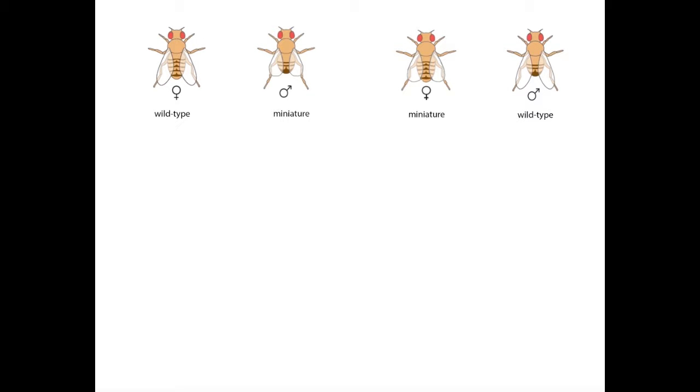X-linkage can often be revealed by observing what are known as reciprocal crosses. In one cross, the male carries the mutant trait, while in the other, the female has the trait. By comparing the results of these two crosses, we can often tell if the trait is X-linked. Let's look at the offspring from the two reciprocal crosses.